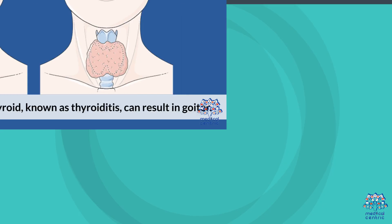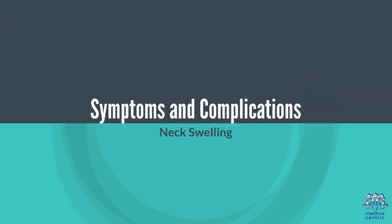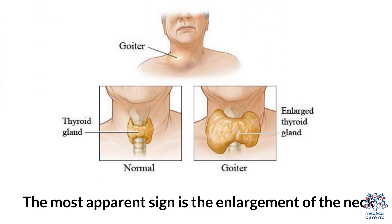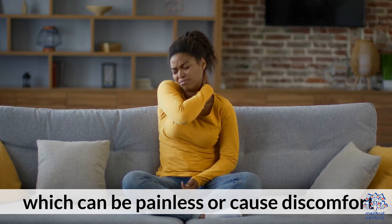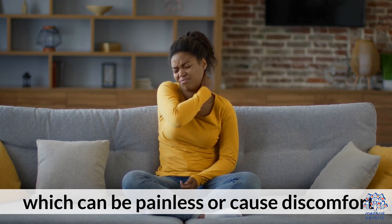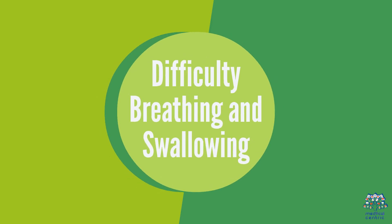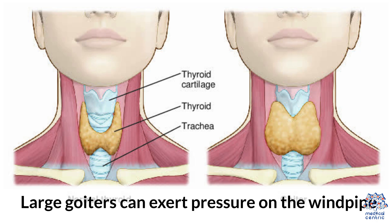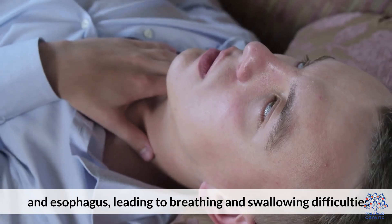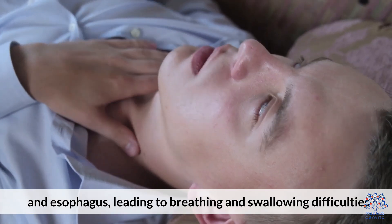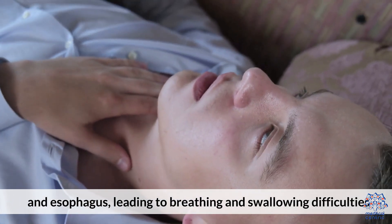Symptoms and Complications. Neck swelling: the most apparent sign is the enlargement of the neck, which can be painless or cause discomfort. Difficulty breathing and swallowing: large goiters can exert pressure on the windpipe and esophagus, leading to breathing and swallowing difficulties.